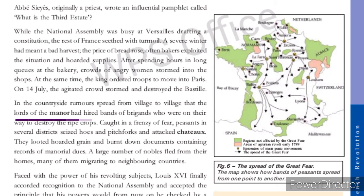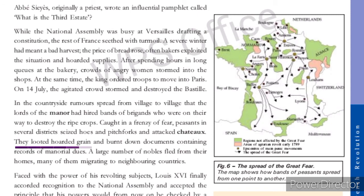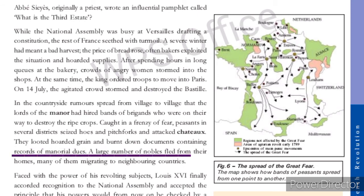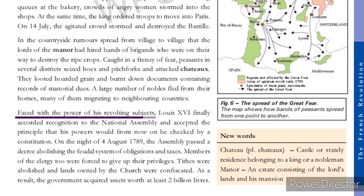In the countryside, the rumor spread that the lords of the manor had brigands who were on their way to destroy the ripe crops. With this fear, peasants in several districts seized hoes and pitchforks and attacked chateaux. The peasants looted hoarded grain and burnt down documents containing records of manorial dues. A large number of nobles fled to neighboring countries.